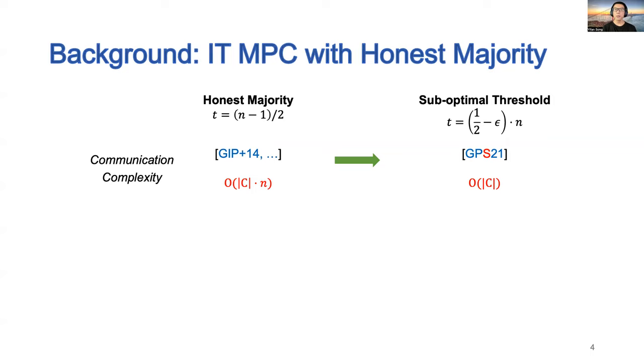A similar scenario in the honest majority setting has been well studied in recent years. In short, when we move from the standard honest majority setting to the suboptimal corruption threshold, we can reduce the communication complexity by a factor of n.